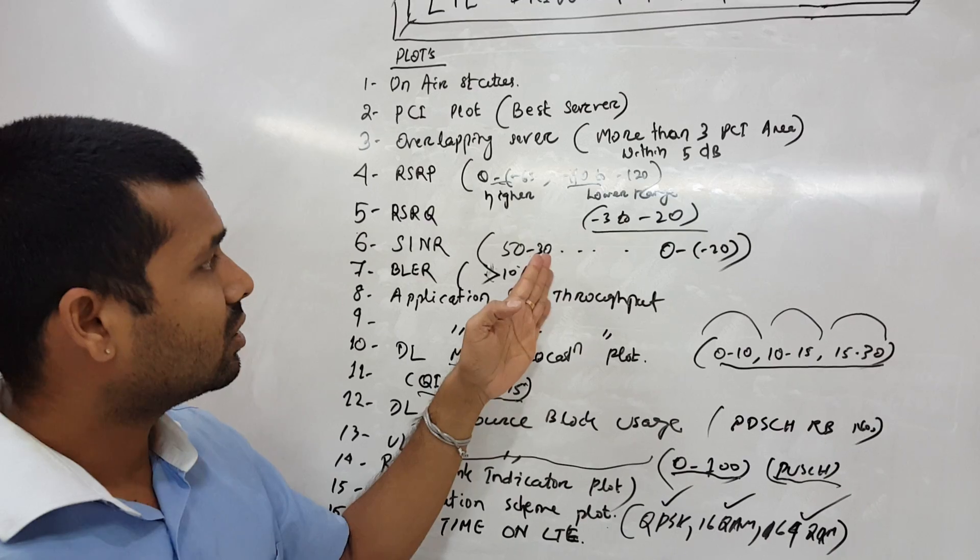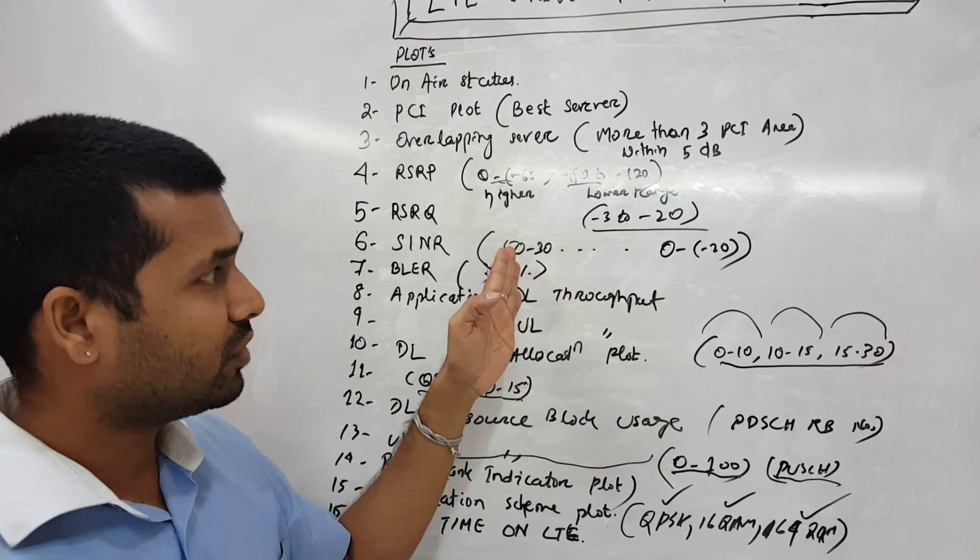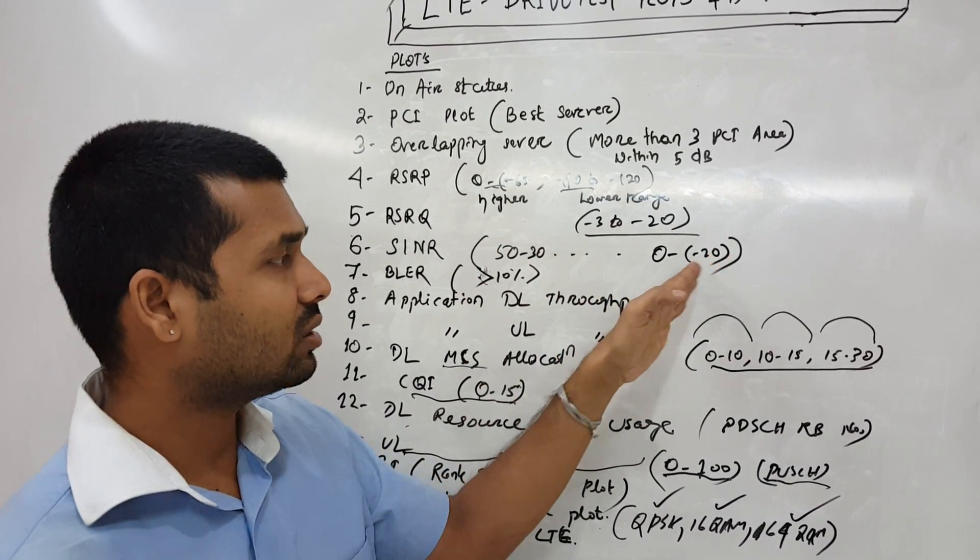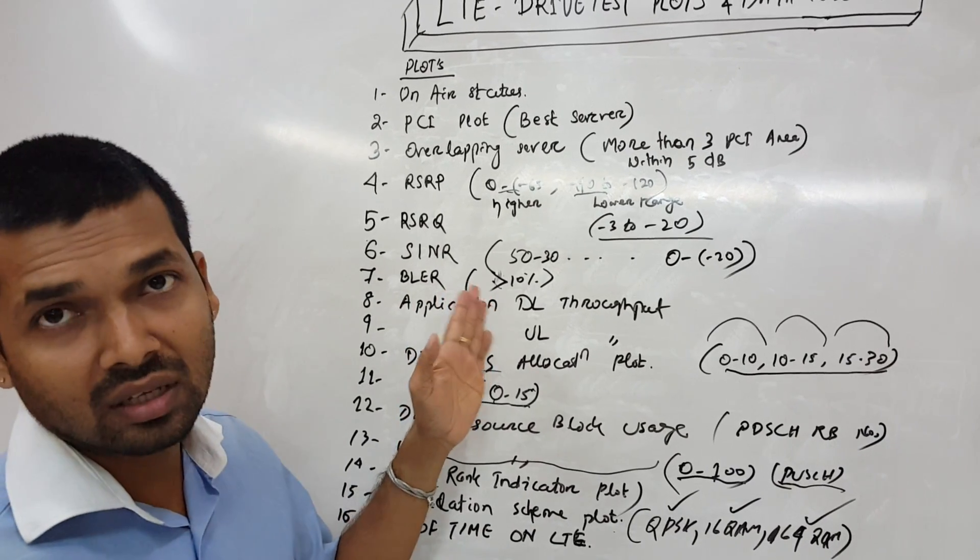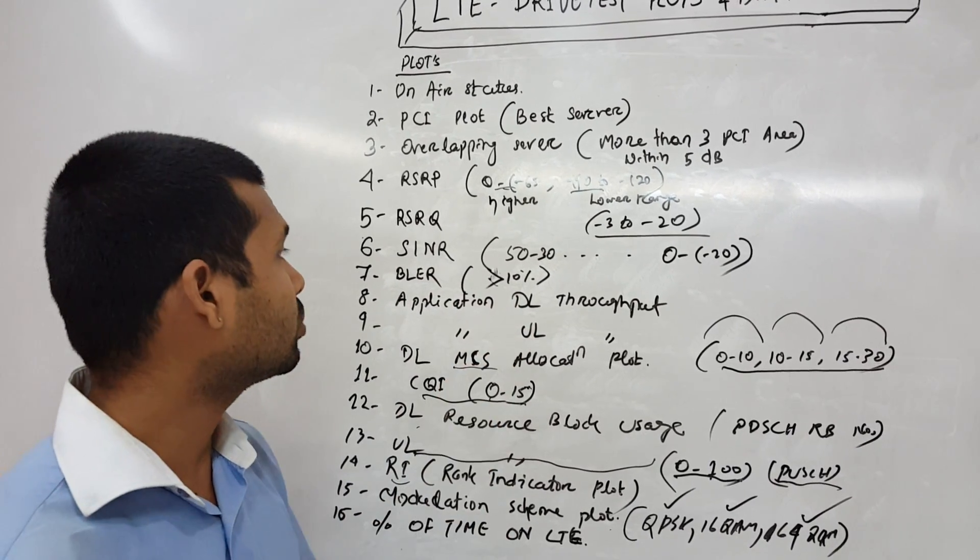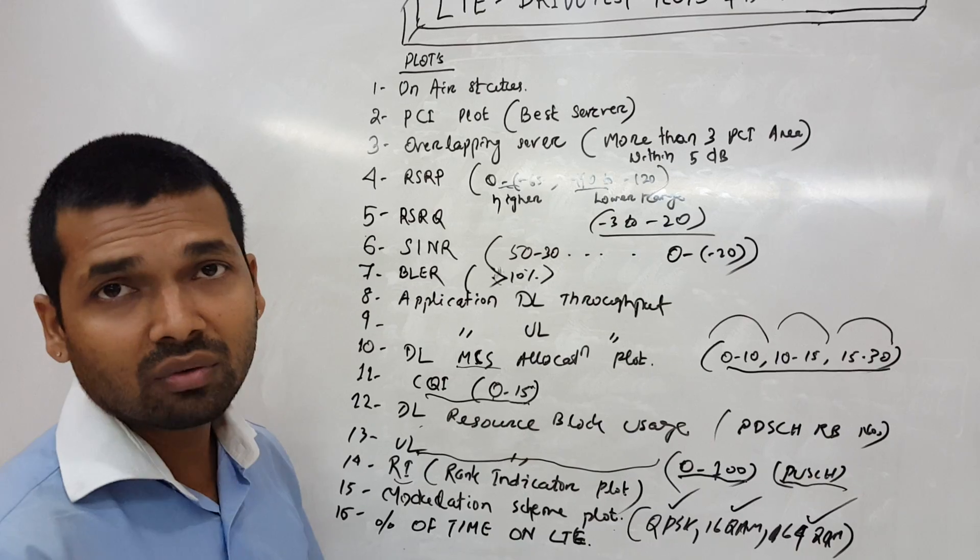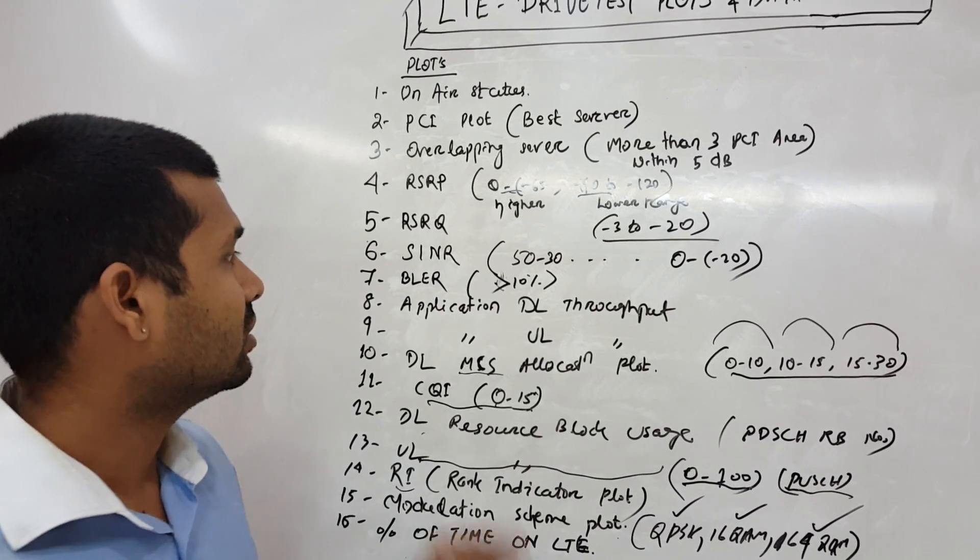Then BLER should be less than 10% in LTE network. So we should optimize the area where we are having high BLER.